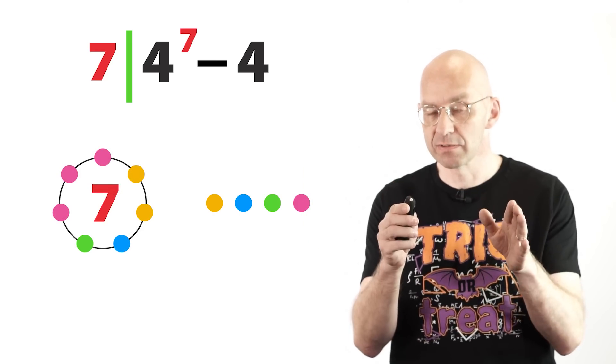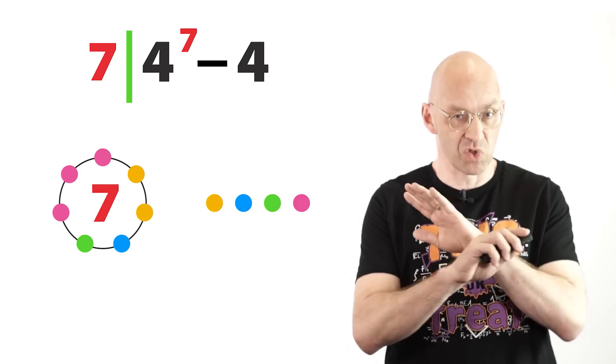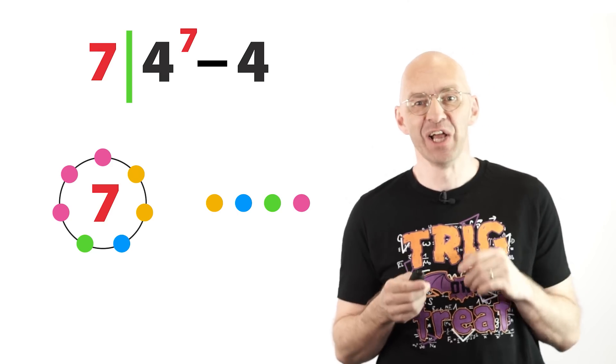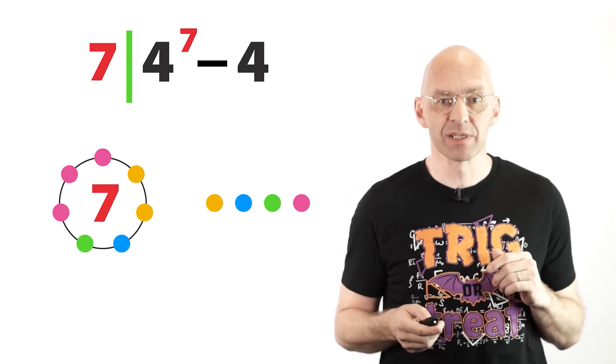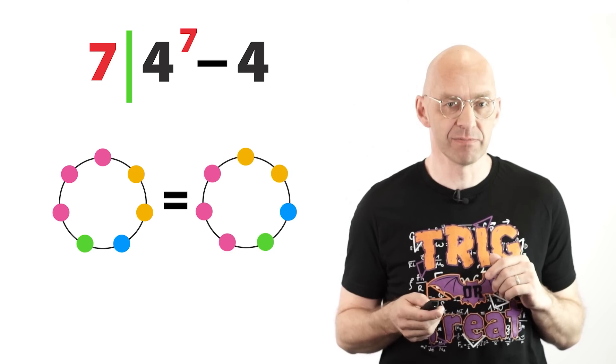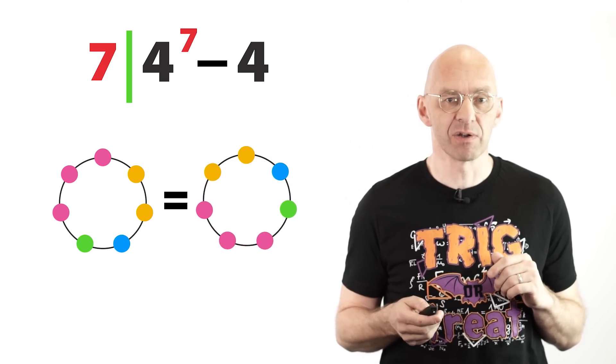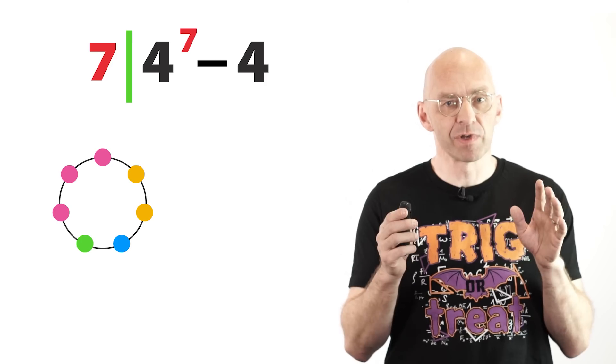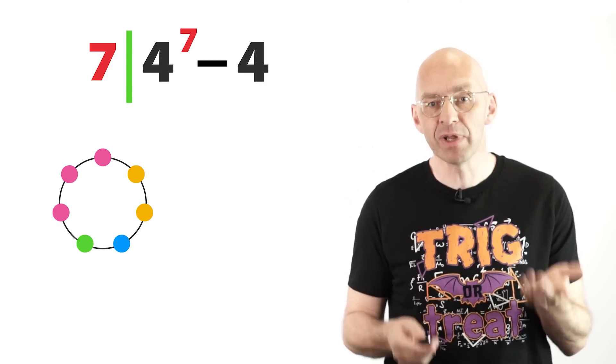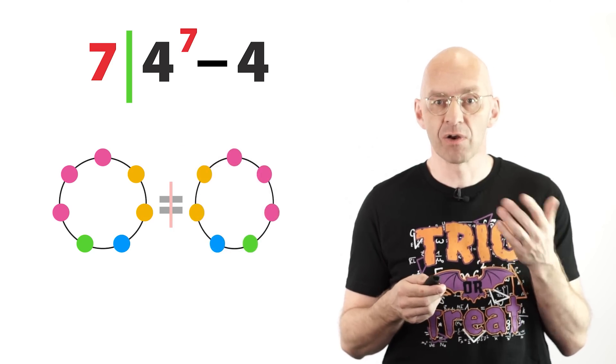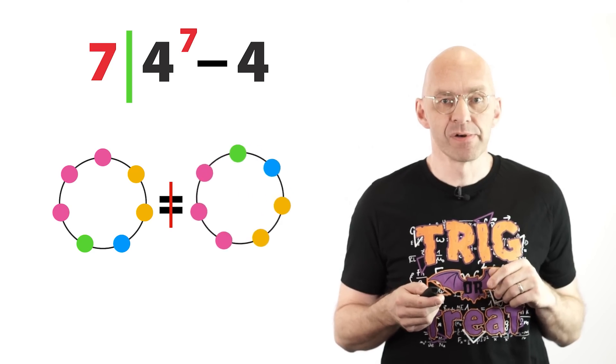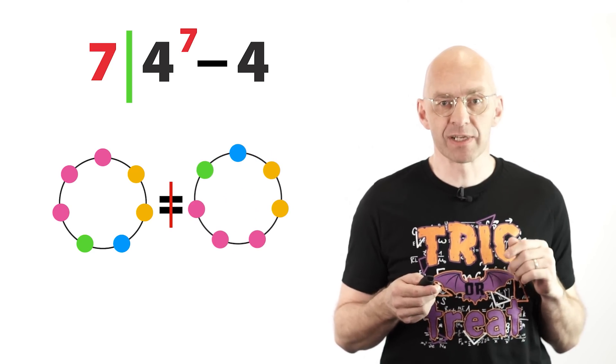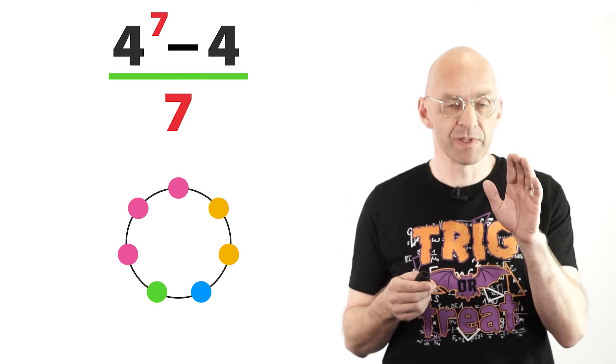Again, seven beads, four colors, not all the same. Also important we consider rotated versions of a necklace to count as one and the same necklace. So all of these guys here, they're all the same necklace. However, we consider two necklaces that are mirror images to be different as long as they cannot be rotated to coincide. We'll show that the total number of such necklaces is 4 to the power of 7 minus 4 divided by 7.